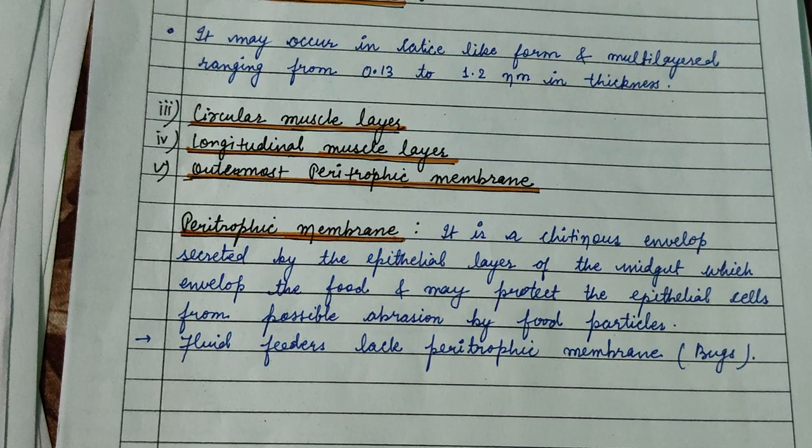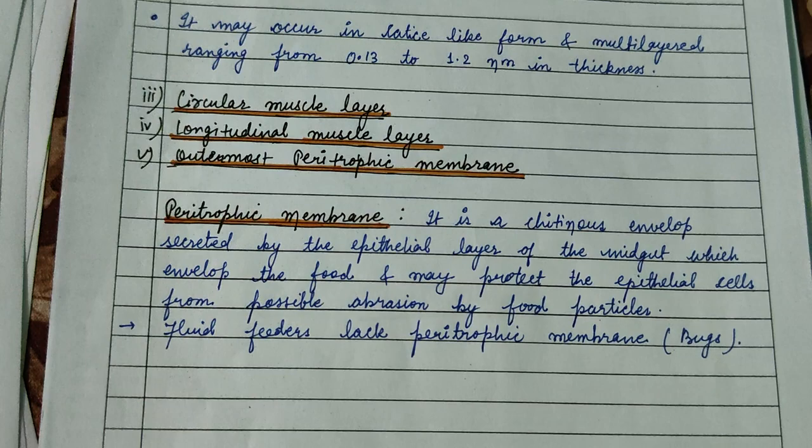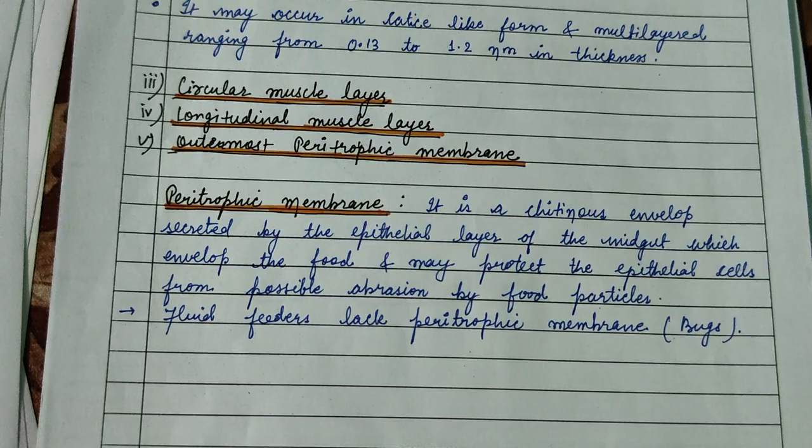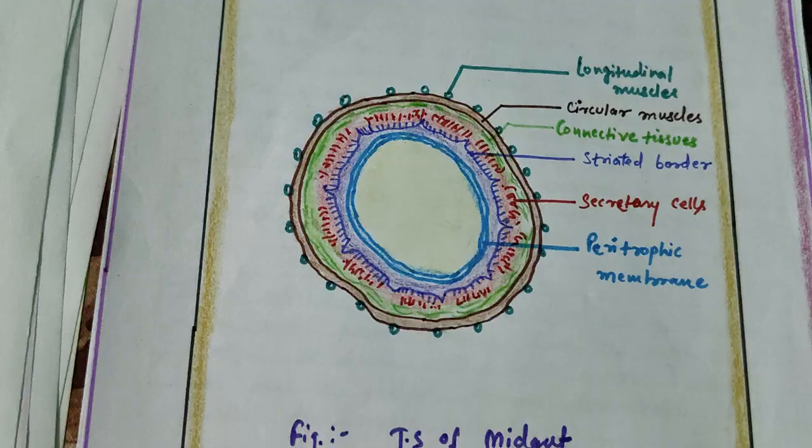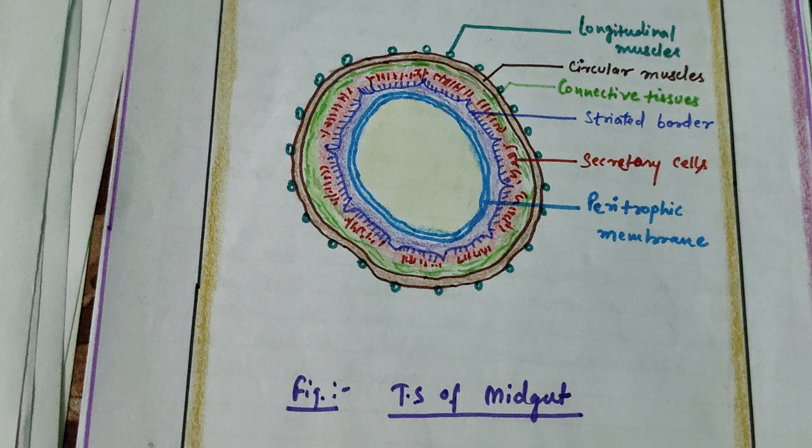The outermost peritrophic membrane is most important for the protection of the midgut. The peritrophic membrane is a chitinous envelope secreted by the epithelial layer of the midgut which envelops the food and may protect the epithelial cells from possible abrasion by food particles. A transverse section of the midgut shows the longitudinal muscle layer, circular muscle layer, secretory cells, and the peritrophic membrane.